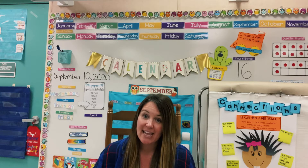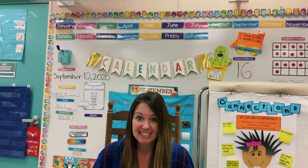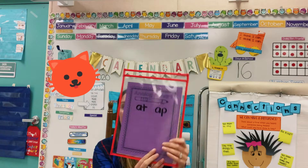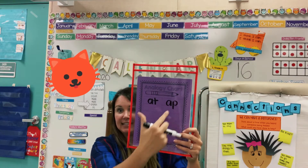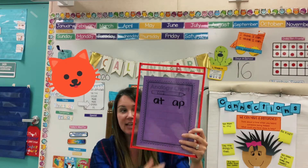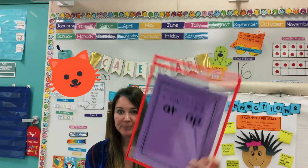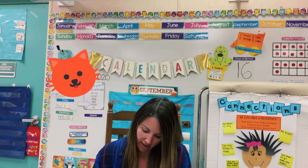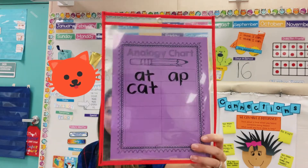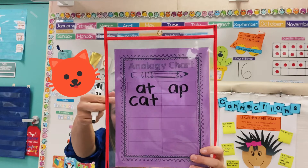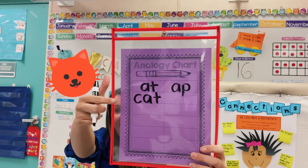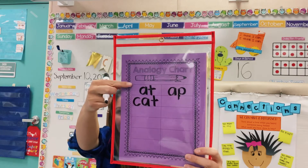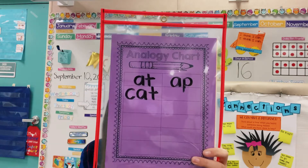My first word is 'cat.' See if you can figure out where you're going to write cat — which side would that go on? C-a-t. Did you get it right? Did you write it over here? C-a-t. Cat is in the 'at' word family.